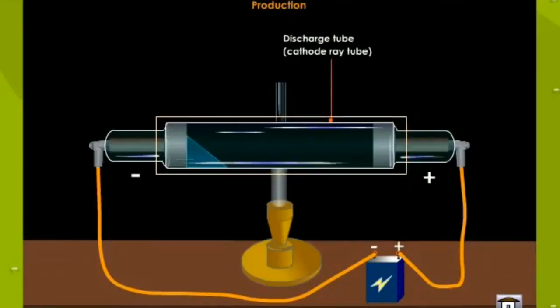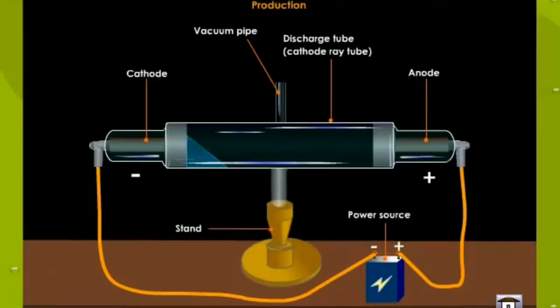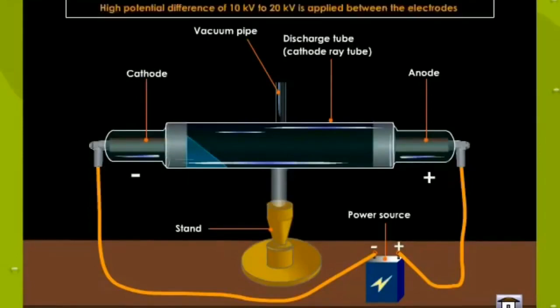named it as discharge tube, with two metallic plates called electrodes inserted, one at each end of the tube. The electrode connected to the negative terminal of the voltage source is called the cathode, and the other one connected to the positive terminal is called the anode. And if you see the diagram, there is a vacuum pump also attached to the discharge tube. This vacuum pump is meant to maintain the gas pressure inside the glass tube.